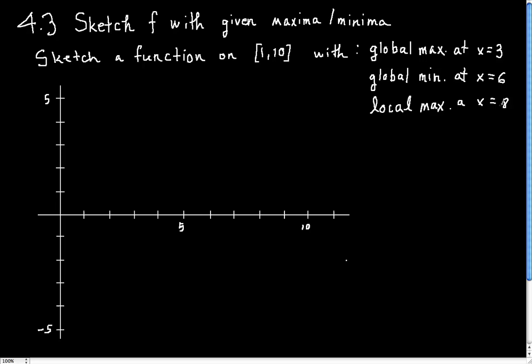So, how should I begin this? I'll just take care of these one at a time. If I want a global max at x equals 3, I go right around here to x equals 3. I can pick it to be pretty much anything, so I'll just say it's going to be right there. The only thing I have to make sure of is that when I'm sketching the rest of this function, this is the highest point because it has to be the global maximum.